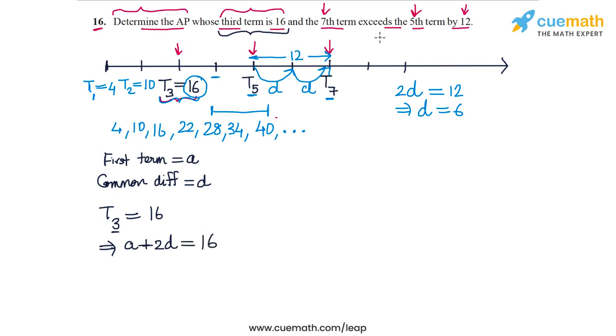Also, we are told that the seventh term exceeds the fifth term by 12. So the seventh term in terms of A and D will be A plus 6D, and the fifth term will be A plus 4D. Now T₇ exceeds T₅ by 12.